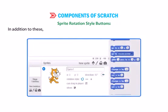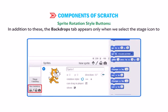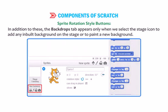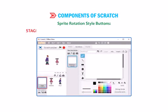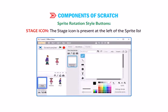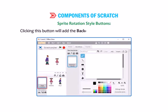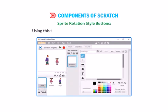In addition, the Backdrops tab appears only when we select the stage icon to add any inbuilt background on the stage or to paint a new background. The Stage Icon is present at the left of the sprite list. Clicking this button adds the Backdrops tab in place of the Costumes tab, and using this tab we can import any background onto the stage.